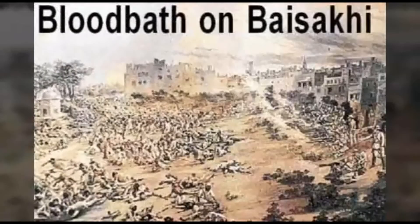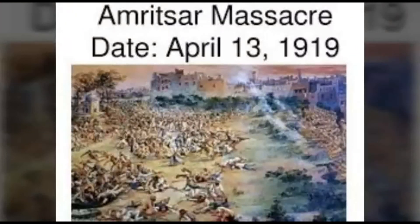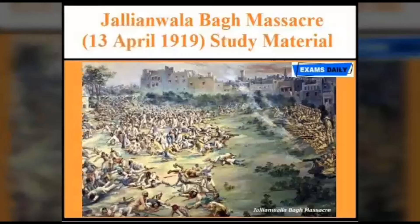1,660 rounds were fired. The army continued firing until the ammunition was over. In this massacre, about 400 people including men and women were killed. Many people were wounded. After firing, curfew was announced and hence immediate treatment to the injured could not be made available. In entire Punjab, military law was enforced and many more were sent to jail by the government. General Michael O. Dyer, governor of Punjab, was responsible for this massacre.